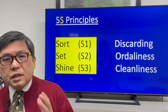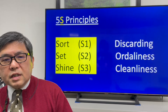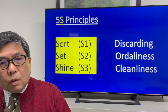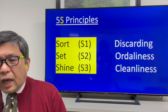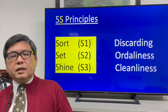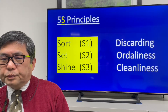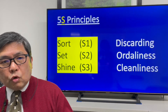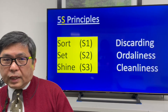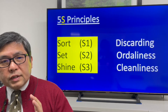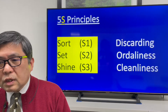Sorting means discarding unnecessary items and clutter from your working venue. Setting is the process of giving proper orderliness to the essential items for your work at your respective work venue. Shining obviously means improving the cleanliness of the work venue. Before you make sorting and setting, it is not good to start cleaning — shining comes after sorting and setting. Otherwise, we misuse our resources and time.